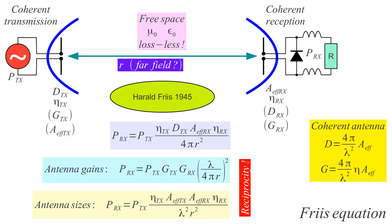Let's make simple link-budget calculations. On the transmitting side I have defined the directivity and efficiency of the transmitter. On the receiving side I have the area and efficiency of the receiver — these are technological issues reflecting how good my antenna is. 4πR² in the denominator is the propagation in free space to a sphere of radius R. The directivity of the transmitter in the numerator improves the link, and the larger the receiving area, the more power I collect. This formula applies for coherent transmission and coherent reception.